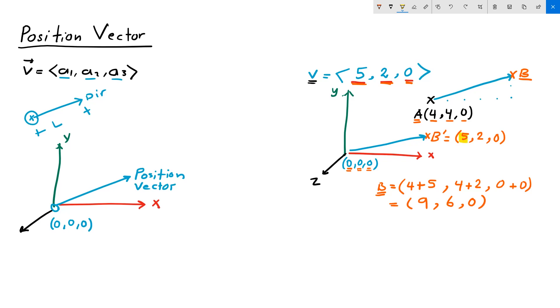Notice that the coordinates of the tip points are equal to the components of the vector. That is what makes position vector a special vector representation, is that the tip point of the represented vector have coordinates that is equal to the components of the vector.